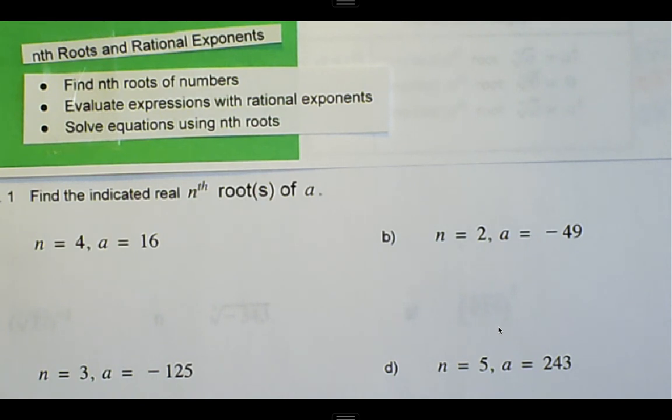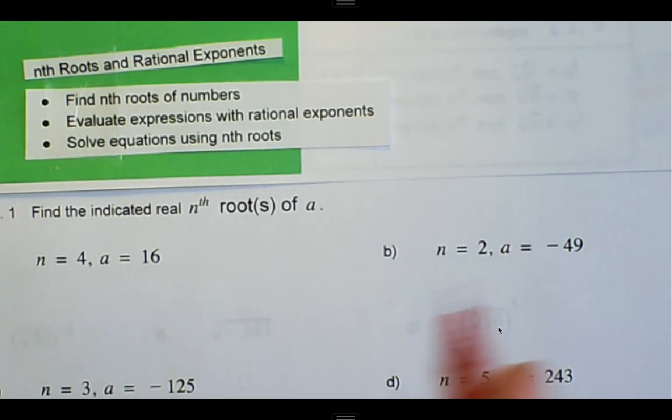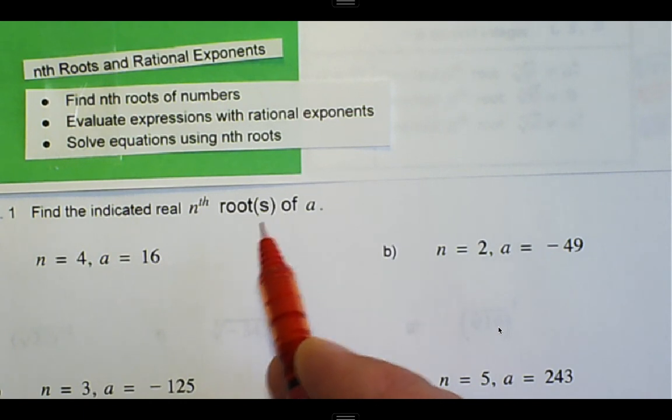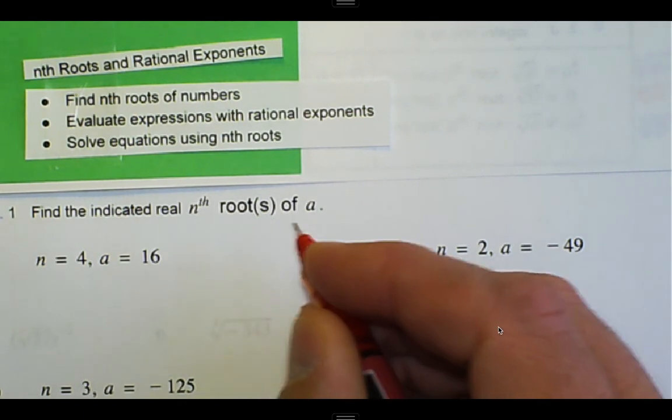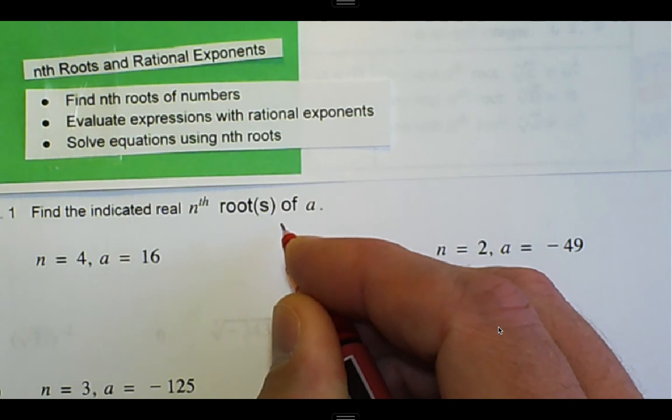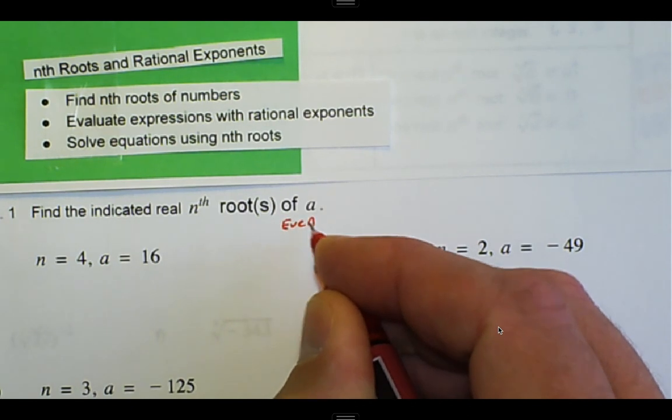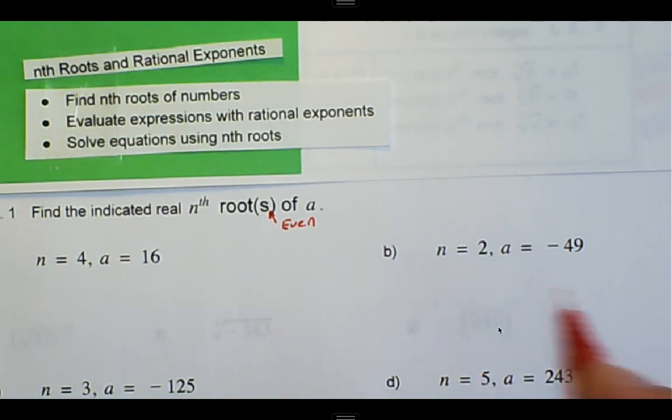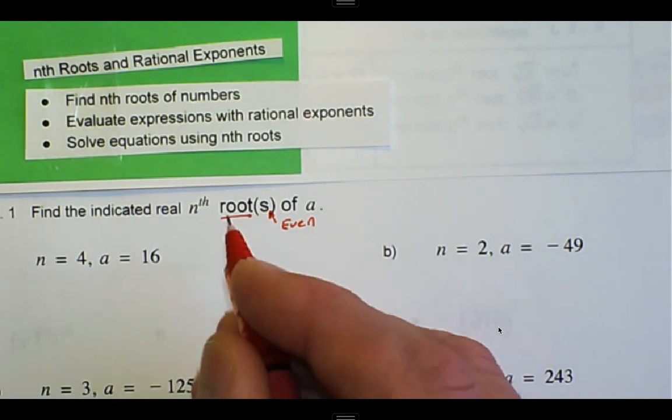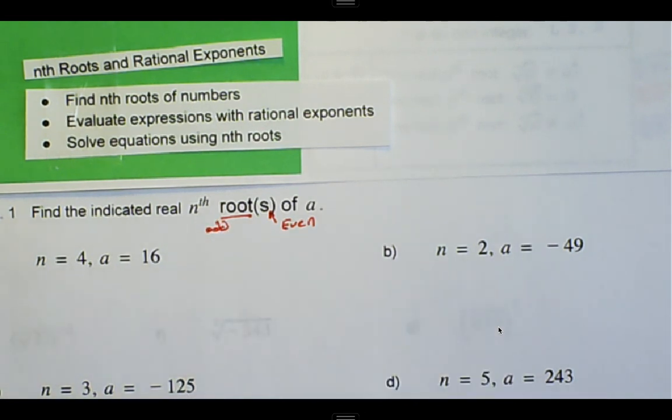This lesson is about nth roots and rational exponents, and we want to find the nth root of numbers. When we have the word roots plural, that means we're talking about having an even root that will give us possibly two solutions. If it's just root, then we're thinking it's going to be odd with just one solution. So anytime we have an even root of a number, we should be thinking two roots.